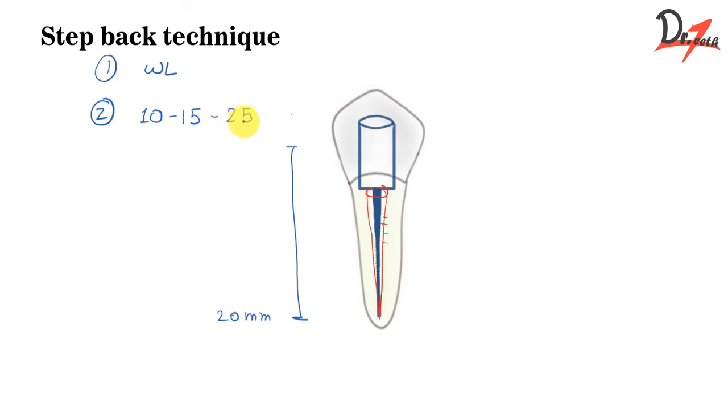Then we go till 25. So usually the apical third is enlarged to develop the apical stop at 25 file, size 25 file. So this will be our master apical file. After this, we will start the step back procedure. So till now, we were increasing the size of the file, but the working length was same.